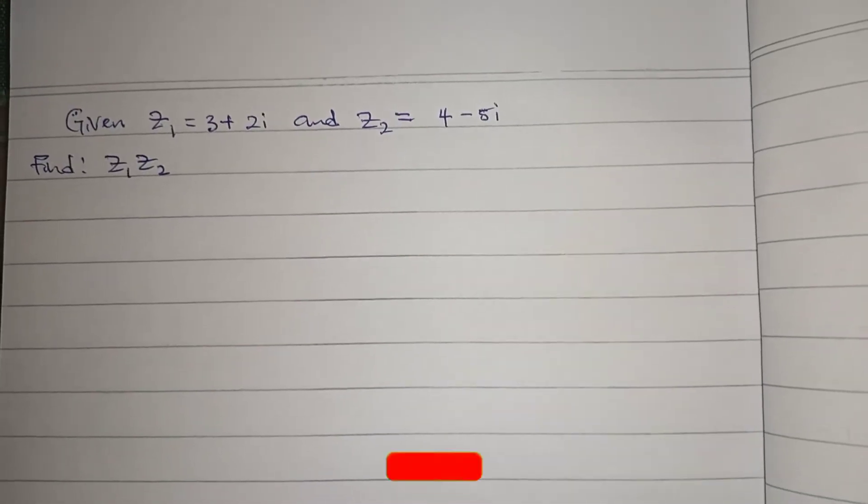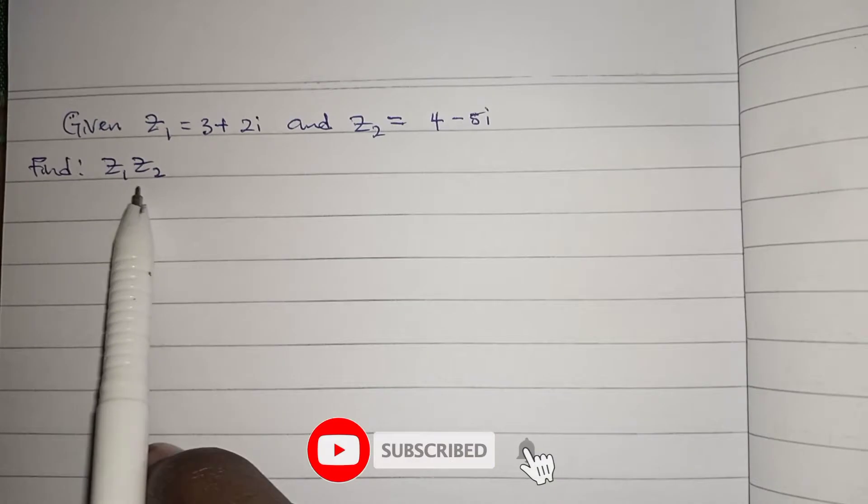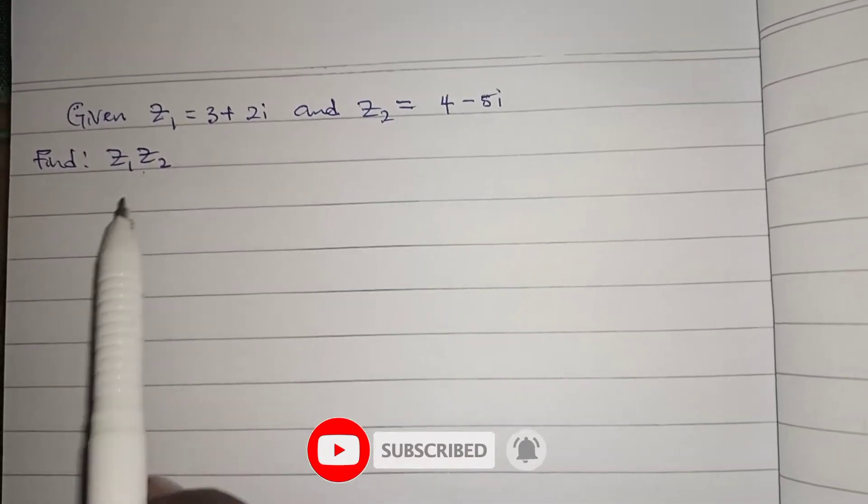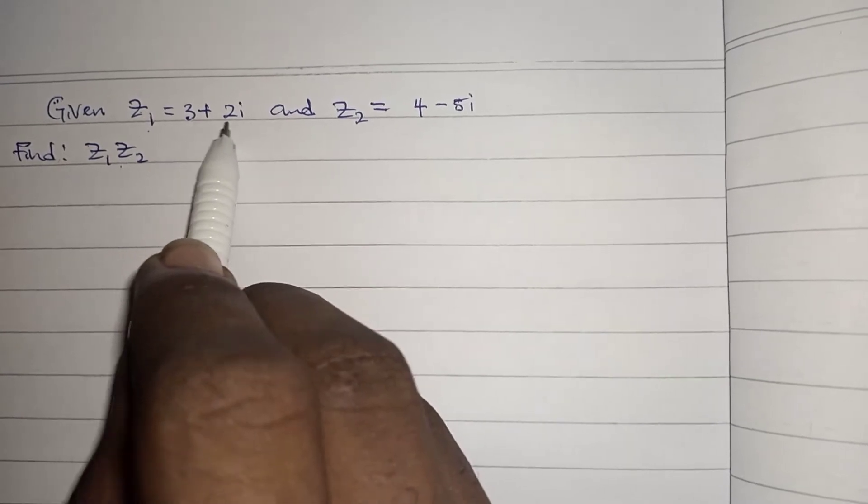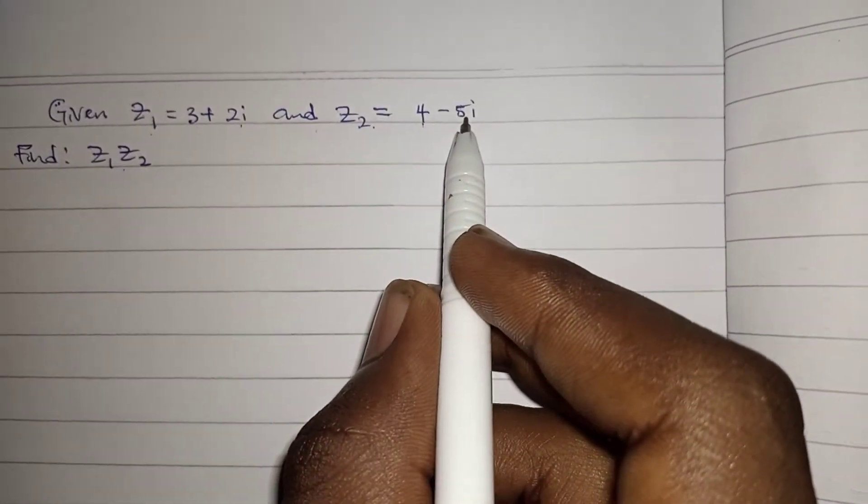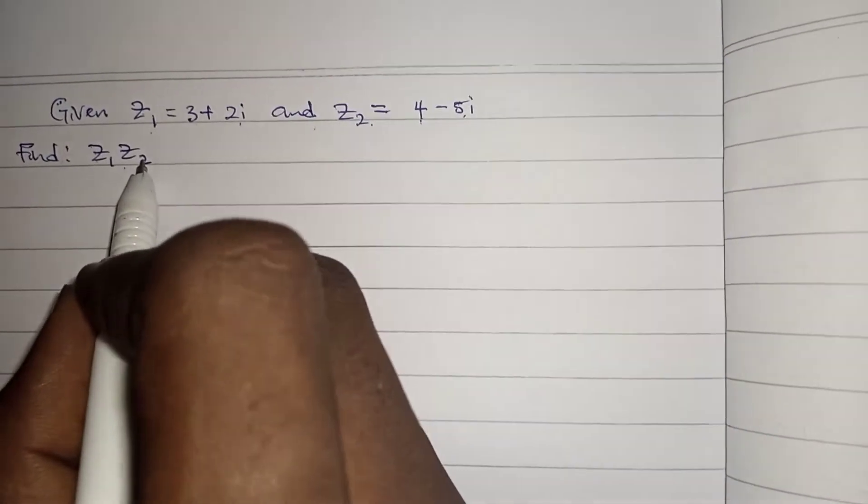In this video I'll be showing how you can multiply and divide complex numbers. Given z1 equals 3 plus 2i and z2 equals 4 minus 5i, find z1 times z2.